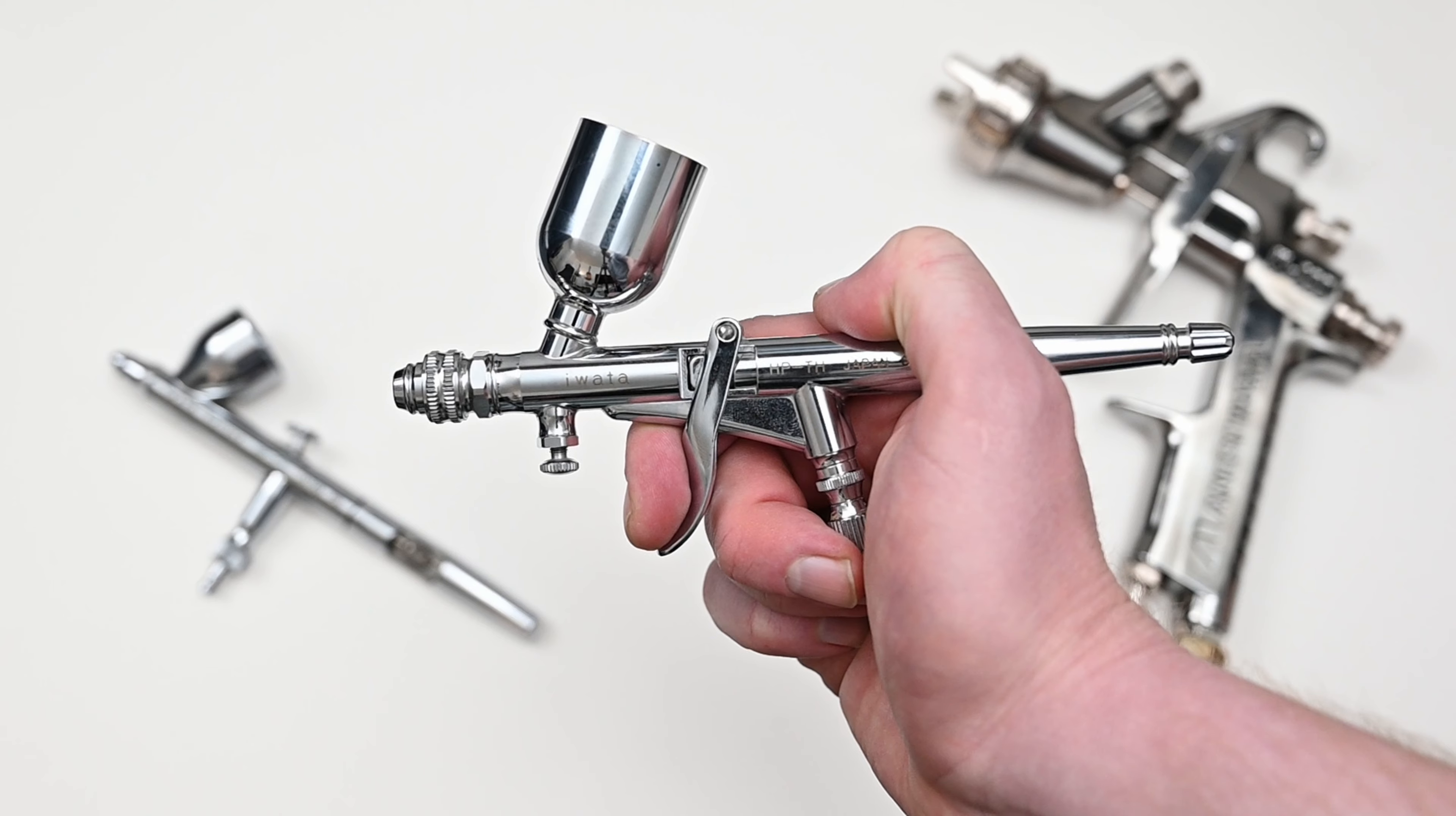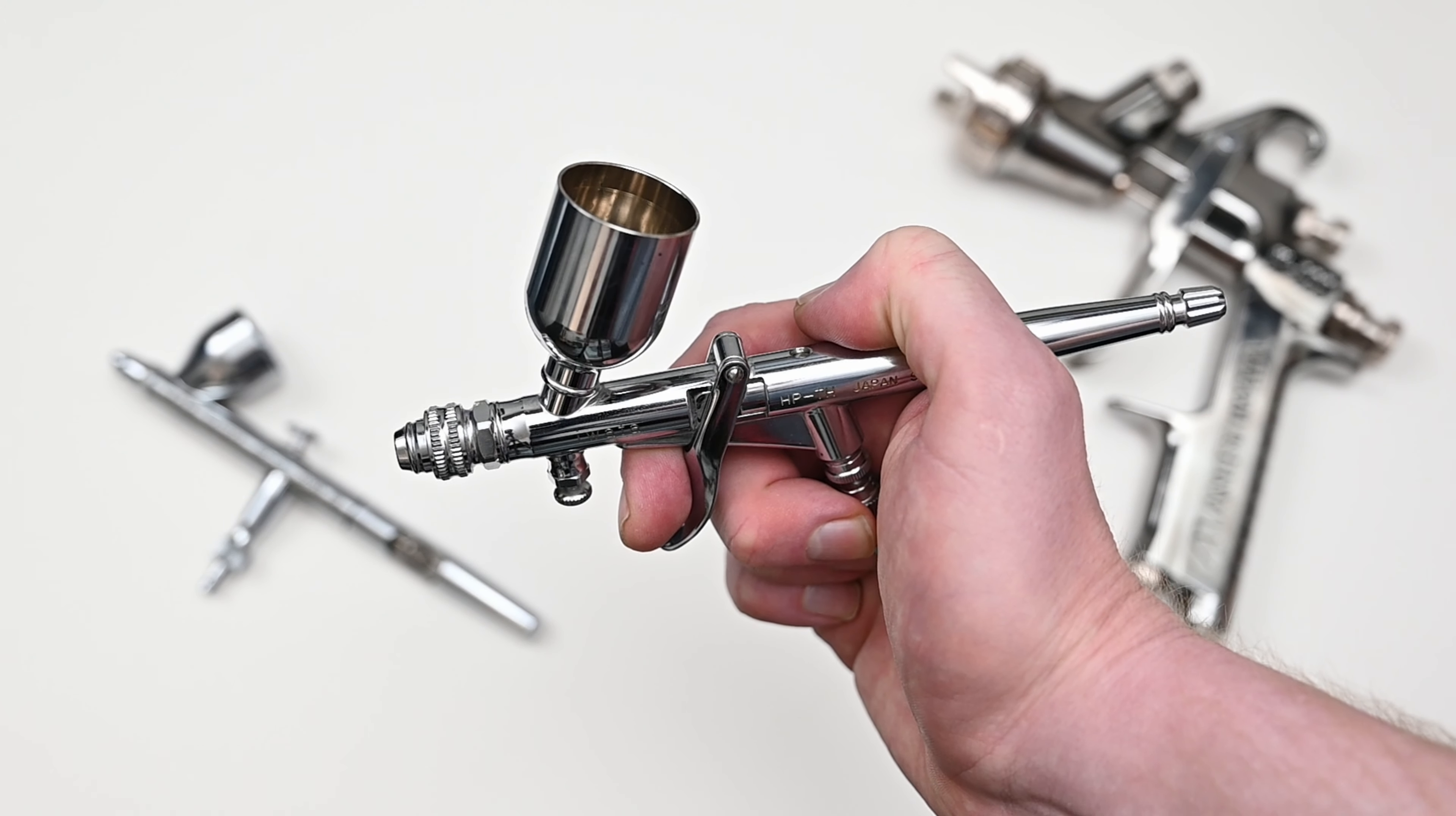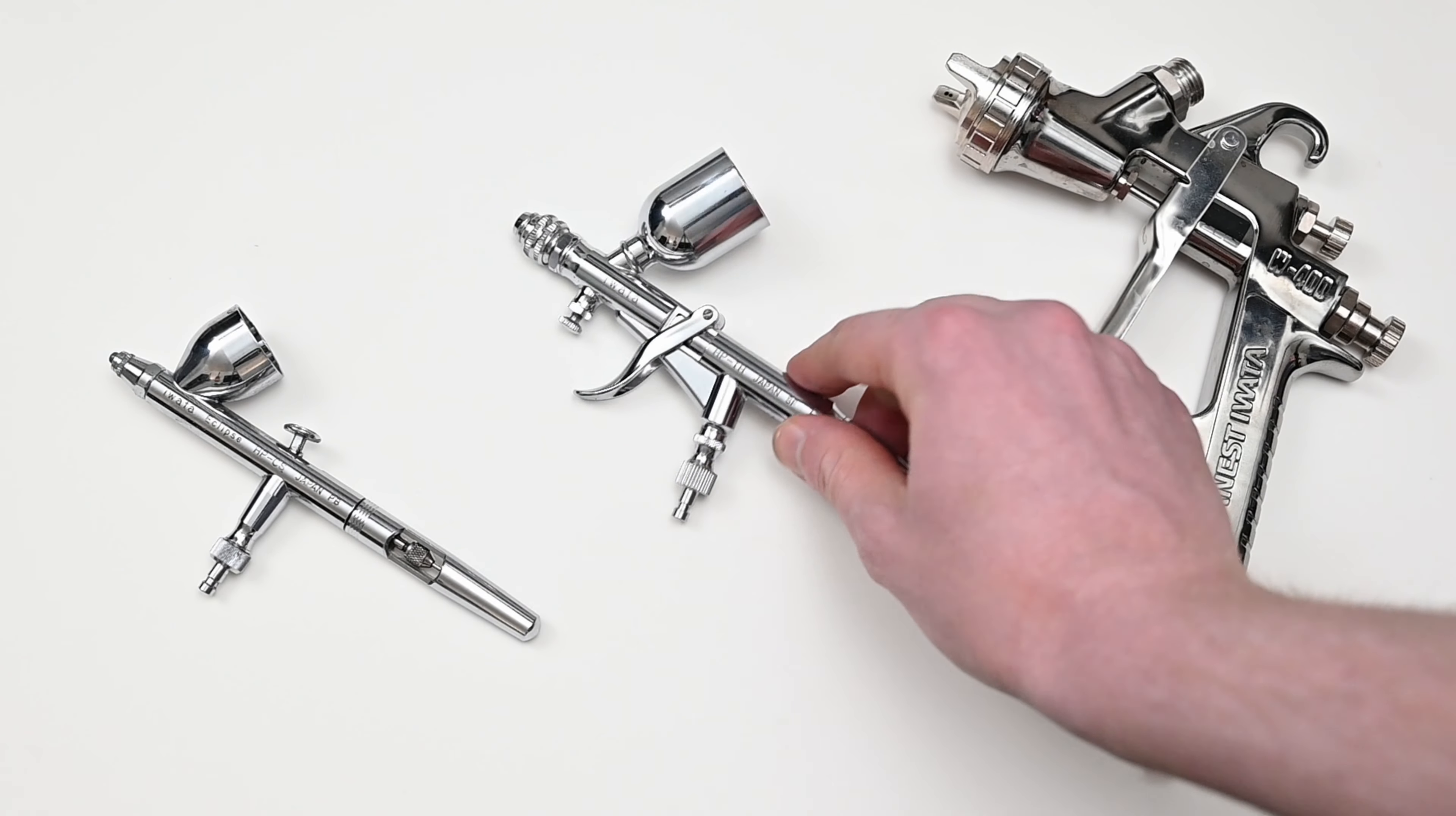The Iwata HPTH doesn't have any way to adjust or regulate that air mixture. The MAC valve on the bottom regulates all the air coming through the nozzle so it has no effect on the characteristics of the fan spray pattern. So unfortunately this means you have a lot less control when you're trying to use the fan cap to spray in those wide passes.